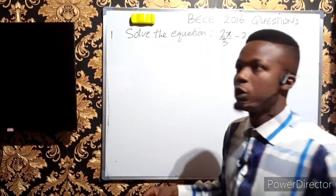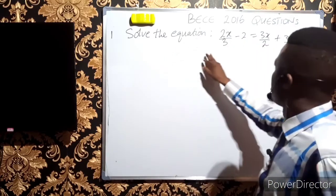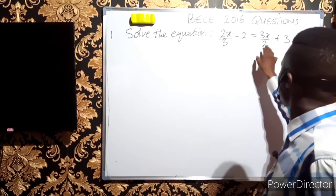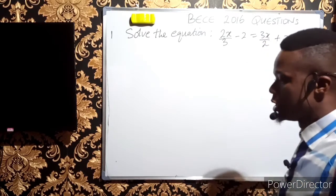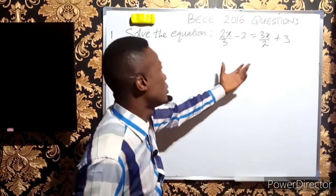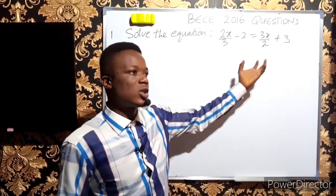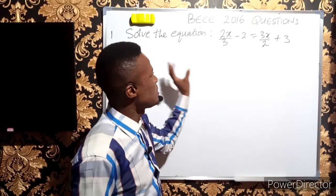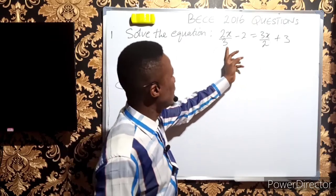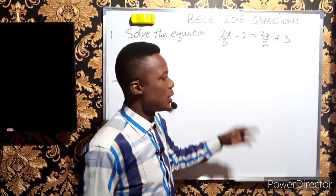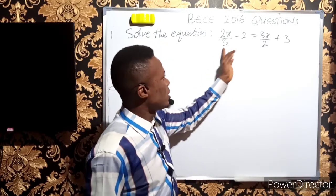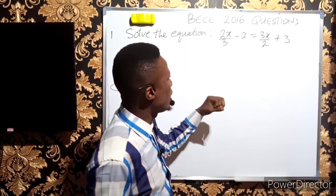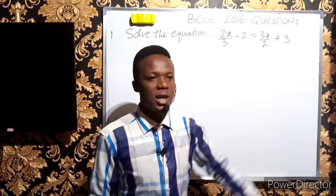In the second question we need to solve the equation (2x/3) - 2 = (3x/2) + 3. To get rid of these fractions, you have to multiply every term by the LCM of the denominators. The denominators are 3 and 2, so the LCM is 6.